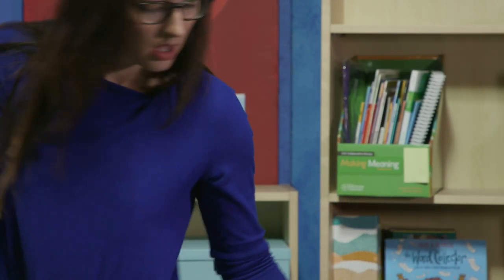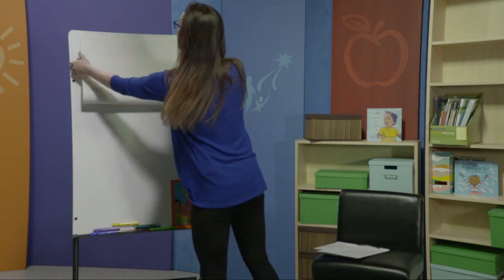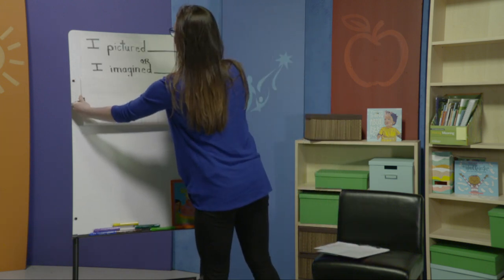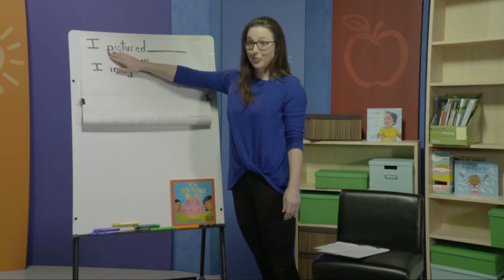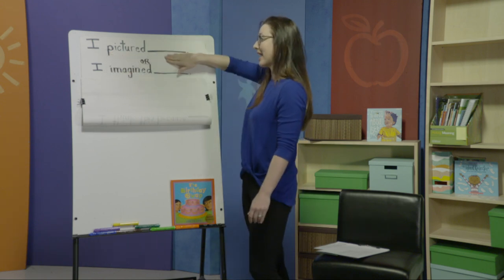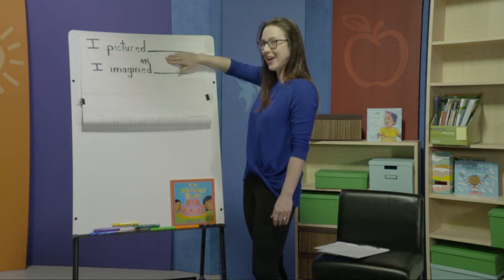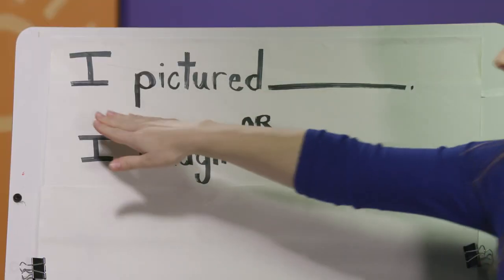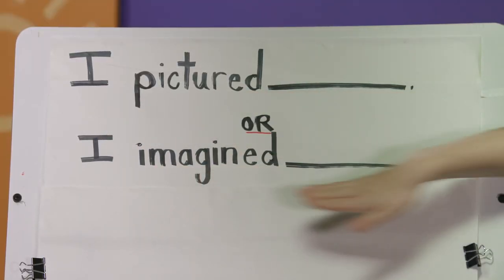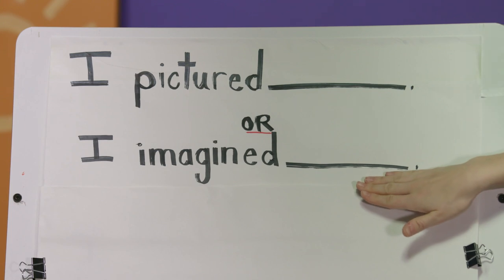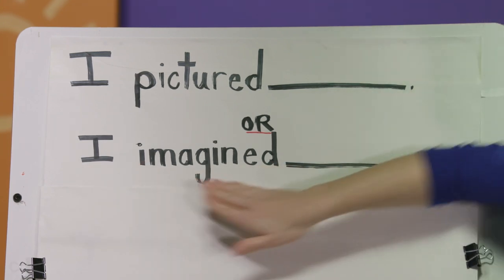When we begin our visualizing today, we're going to use the same sentence stems that we did last week. We have — repeat after me — 'I pictured blank.' Try that now. 'I pictured blank.' Or 'I imagined blank.' Ready? 'I imagined blank.'